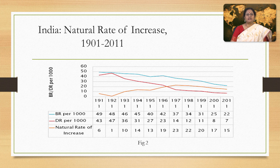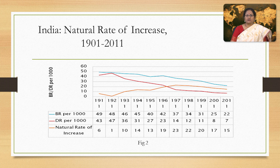Let us discuss what happened in India. The figure shows both birth rate and death rate on the Y-axis and time on the X-axis. Both birth rate and death rate were high till 1921, which represents stage 1 of demographic transition. After that, death rate started falling but birth rate was still high. As a result, growth rate was high — this second stage is also known as the population boom. From 1981 onwards, growth rate started falling, which indicates that India has entered the third stage of demographic transition.